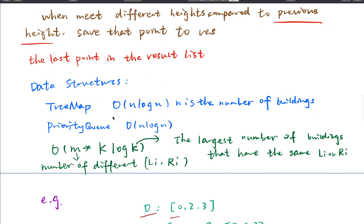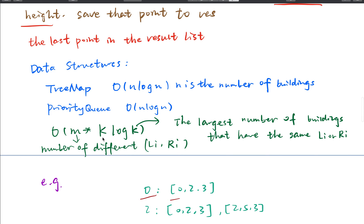We use a tree map and also a priority queue. Both data structures have time complexity of O(n log n) because they are sorted data structures. This is used in the for loop where we iterate the tree map, and we also have to iterate through buildings that have the same index.